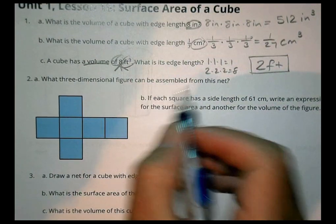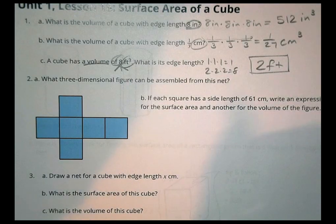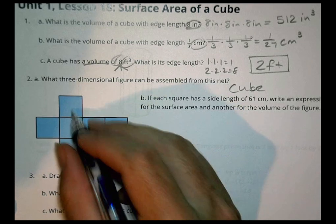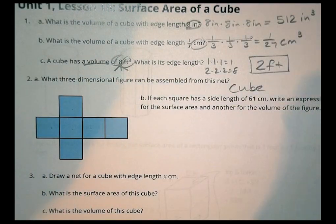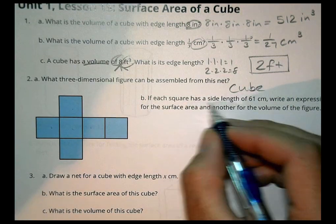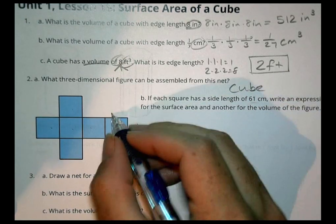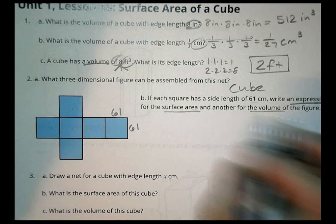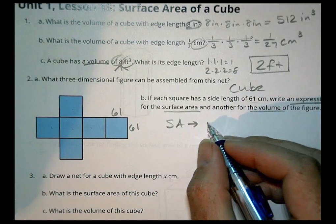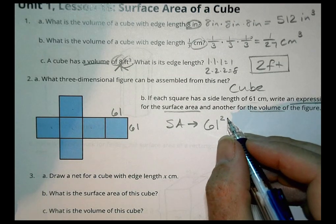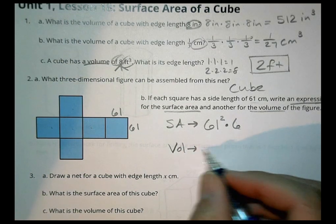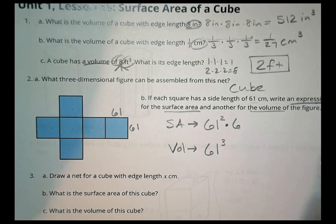Number 2: what three-dimensional figure can be assembled from this net? For the first time it's not a triangular prism — it's a cube! All the faces are squares, and there are 6 of them. If each square has a side length of 61, write an expression for the surface area and another for the volume. Surface area: 61 squared times 6, in centimeters squared. Volume: 61 cubed, in centimeters cubed. We just leave it as an expression.